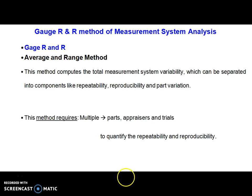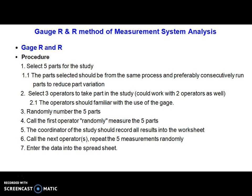This method requires multiple parts, appraisers, and trials to quantify the R&R values. Let us select five parts for this study. These parts should be selected preferably from the same process being produced, and preferably in a sequence.